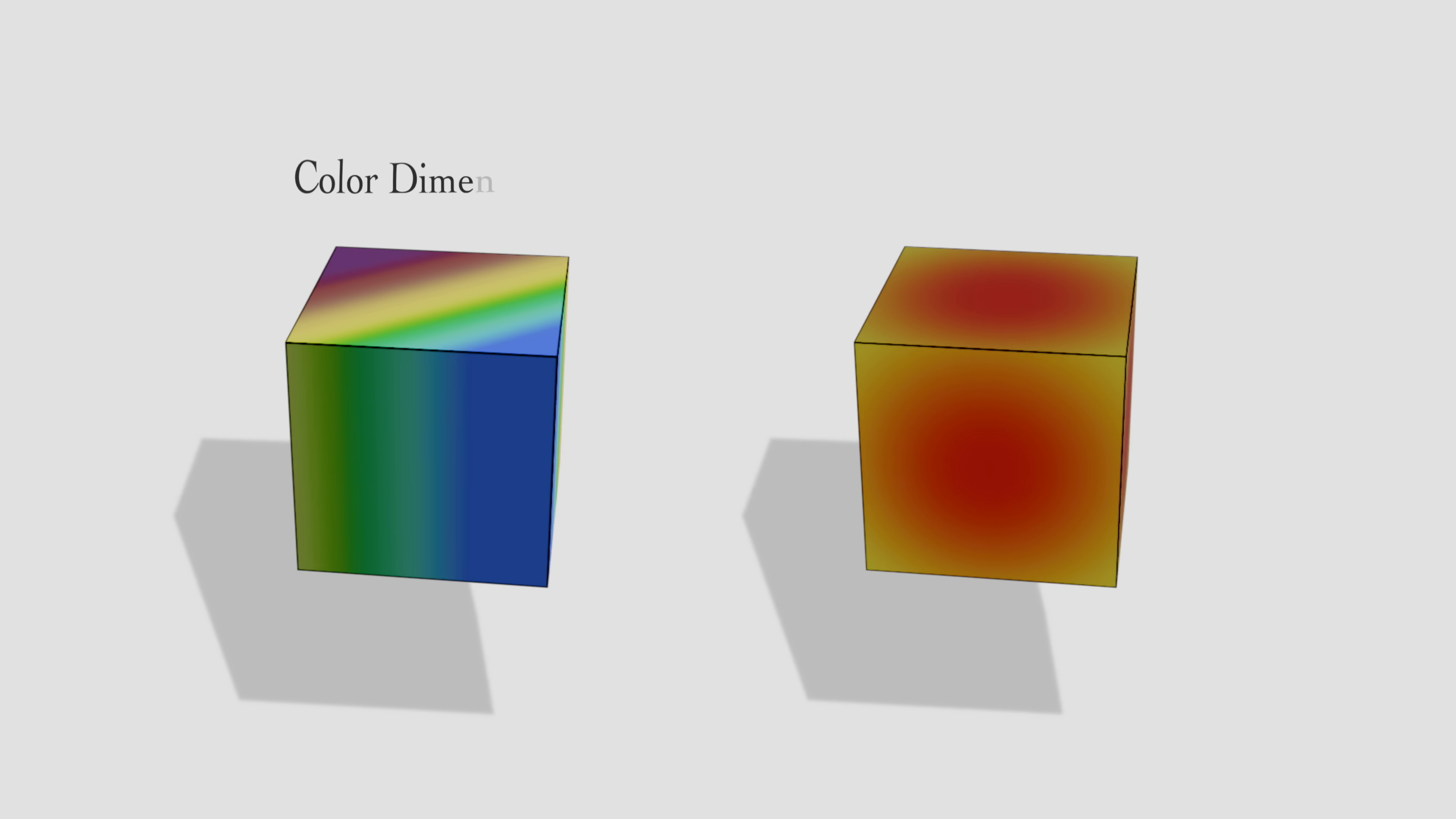For instance, given a cube, we can always define something like an extra color dimension or temperature dimension upon it.